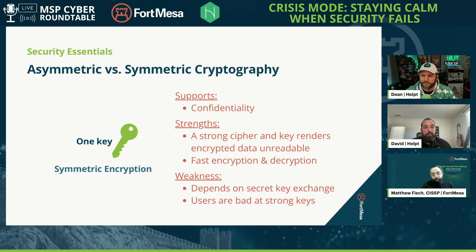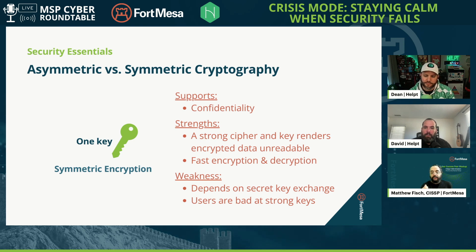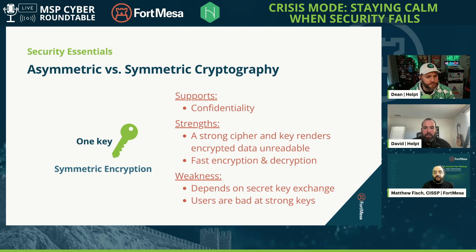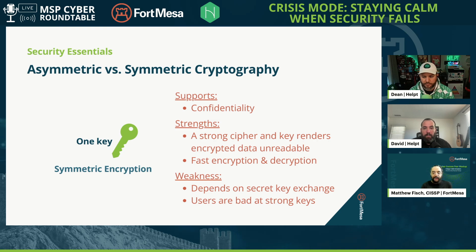Symmetric encryption has basically just one use: keeping data secret — confidentiality. The strength of symmetric encryption is that if you have a strong cipher, which is the algorithm used to scramble the data, and your key is also strong and remains secret, the encrypted data is unreadable. It's legally unreadable, in fact. If you lose encrypted data — like you leave it on a bus or it's downloaded by hackers —